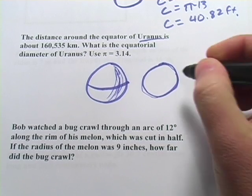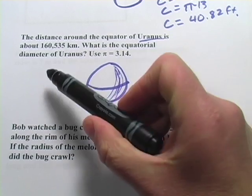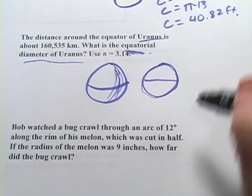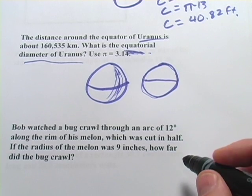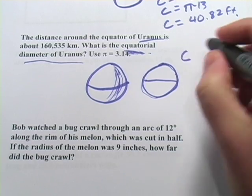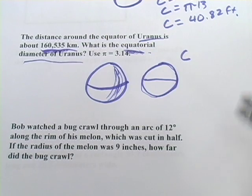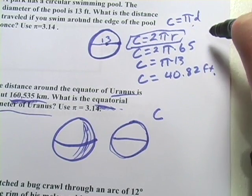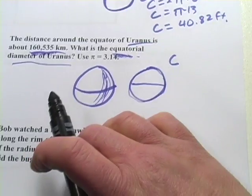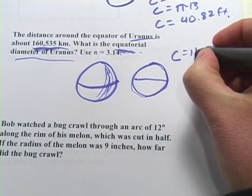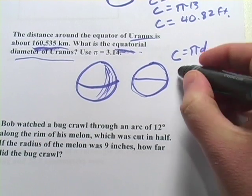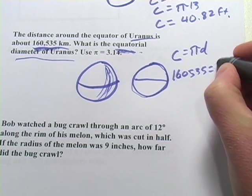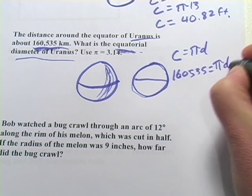So we're going to use our circumference formula. And what we're being asked to find is the diameter, the equatorial diameter. So that would be the distance across right there. So we have circumference, that's this number here. We're trying to find diameter. This may actually come in handy. I'm going to use circumference equals pi times diameter.